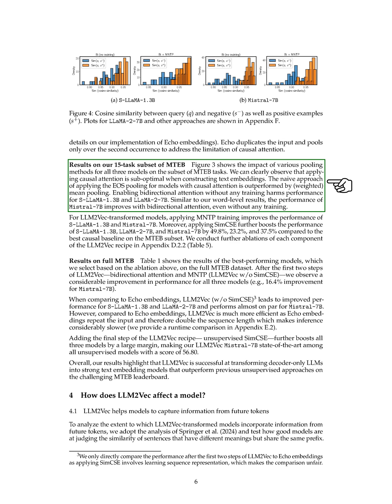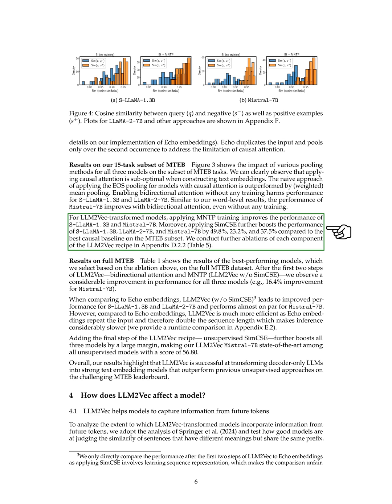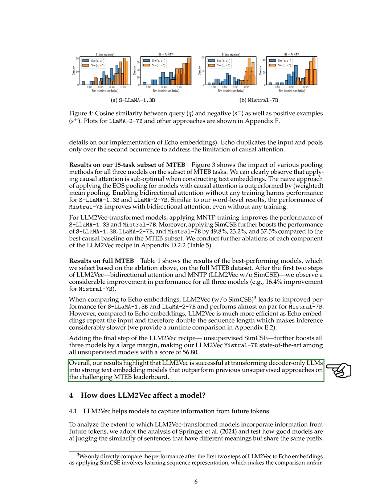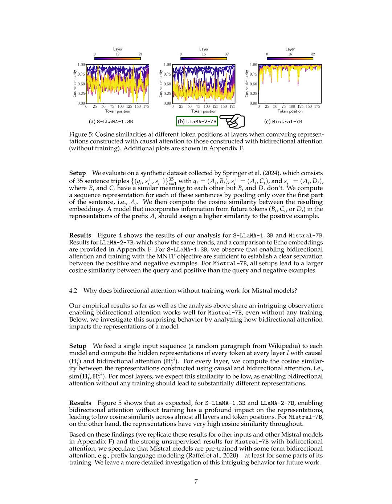Bidirectional attention without training did not improve performance for some models but did for others. Training with MNTP and applying SIM-CSE further enhanced the performance of our models significantly. When we expanded our evaluation to the full MTEB dataset, we observed a notable performance improvement after implementing bidirectional attention and MNTP. Compared to ECHO embeddings, our LLM2-VEC model was more efficient and achieved state-of-the-art results, especially after incorporating unsupervised SIM-CSE. Our LLM2-VEC model effectively captures information from future tokens, as demonstrated by our analysis on sentence similarity, confirming its ability to incorporate future token information into representations.